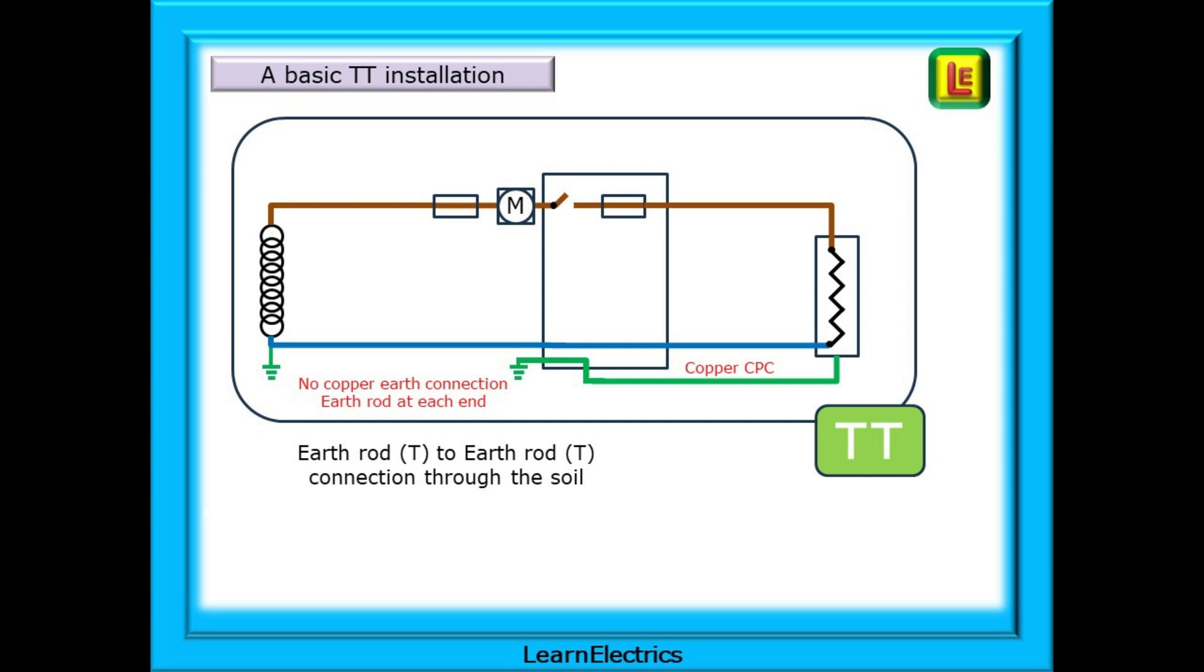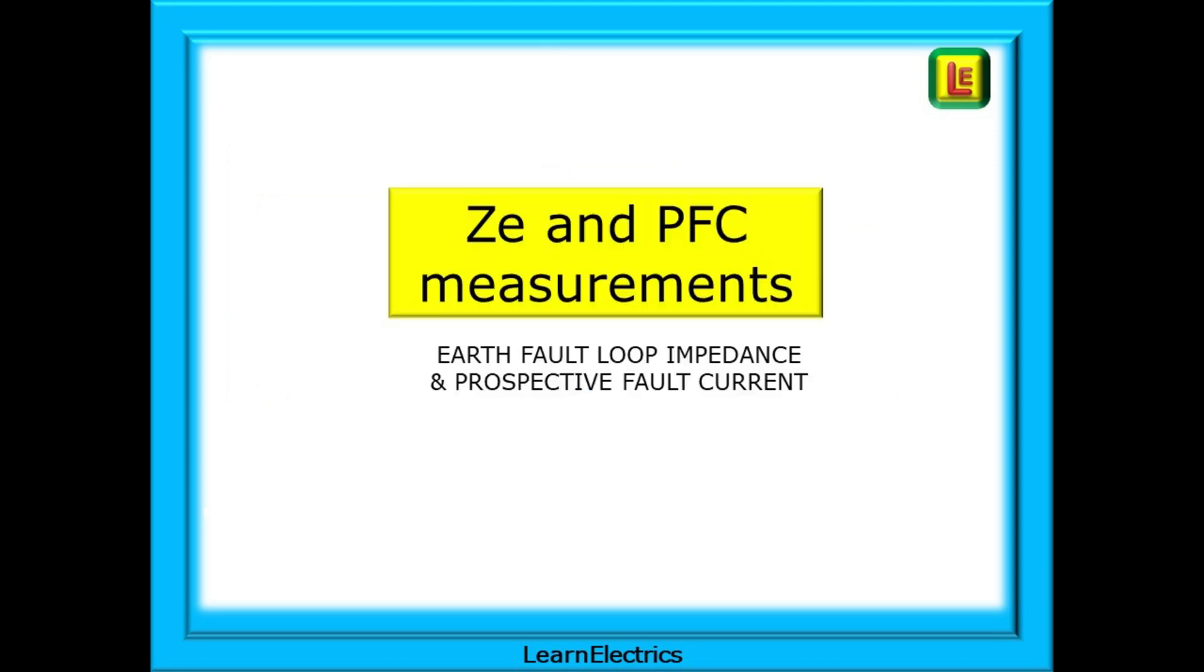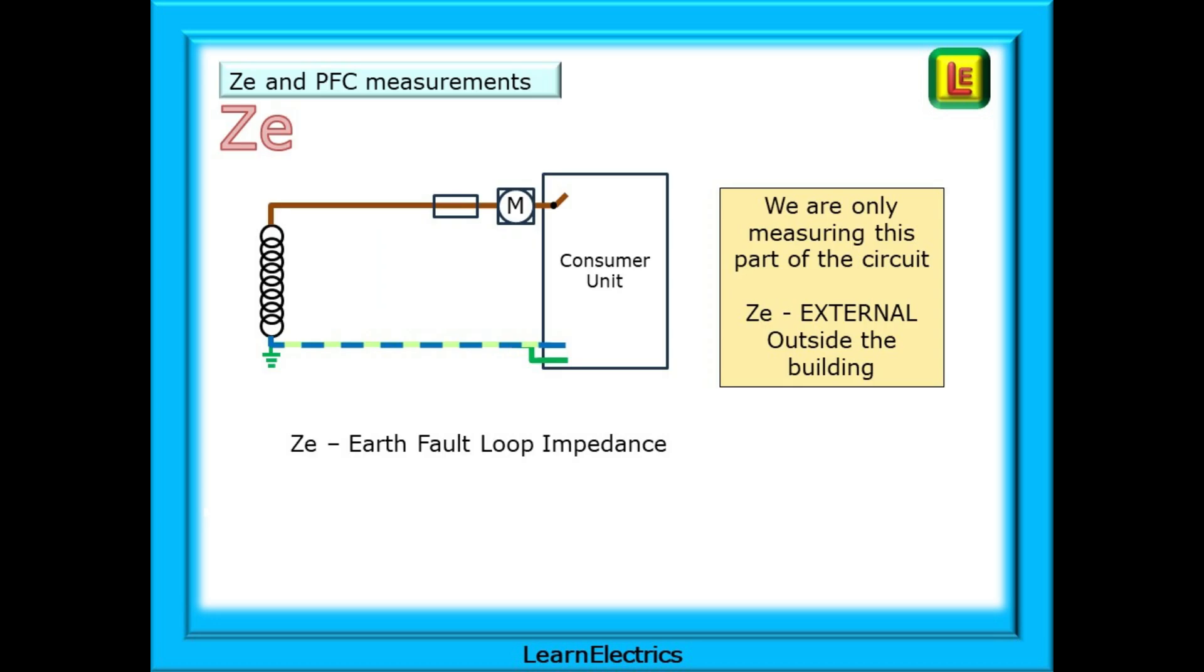If we look now at ZE and PFC measurements we will see that ZE or earth fault loop impedance to give it its full name and prospective fault current are two corners of the same ohms law triangle. We call it impedance and not resistance because ZE is measured on a live AC system. Taking ZE first, if we think of the installation drawings from the first few slides, this drawing shows just the part that is tested for ZE to make it easier to understand.